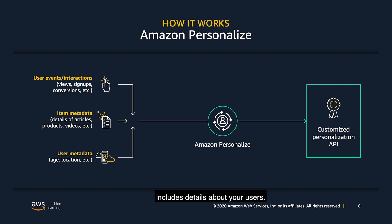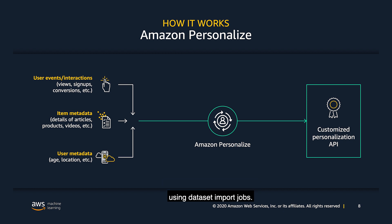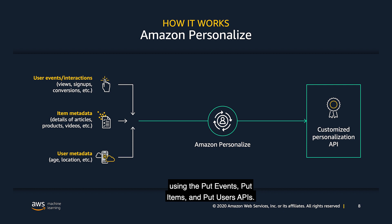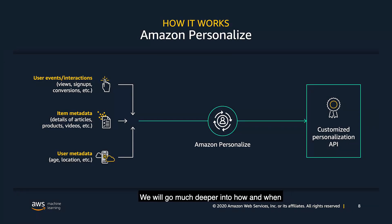The third dataset type includes details about your users — for example, their location, age, gender, subscription tier, and so on. You can get your data into the service using two different methods. You can import your datasets into Personalize in bulk using dataset import jobs. This is a great way to bootstrap your models with historical event data and data about your items and users. You can also stream events, items, and users into the service using the put events, put items, and put users APIs. This is how you can keep your datasets in Personalize updated with the latest interactions and metadata from your applications.